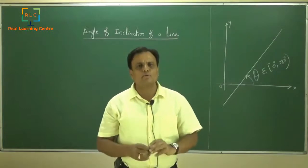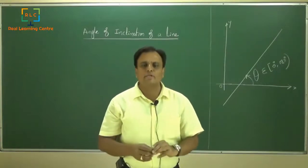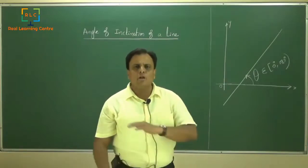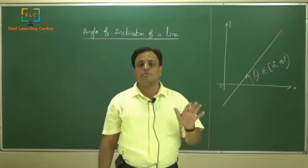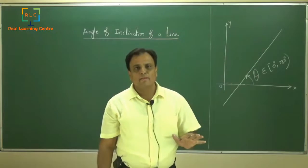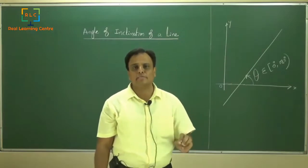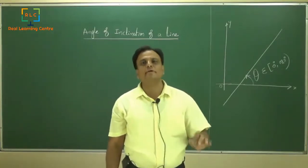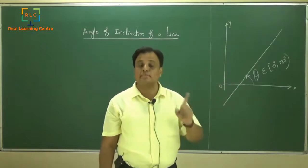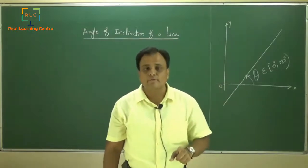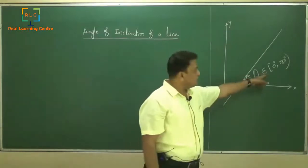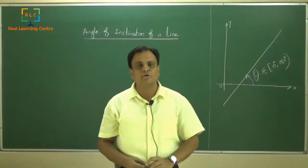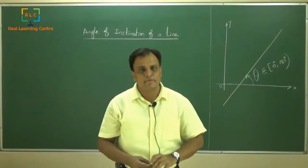One thing to understand properly: the inclination of the line always lies in the interval 0 to 180 degrees. For all horizontal lines, the angle of inclination will always be 0 degrees. The angle of inclination is the angle of the line with the positive x-axis, measured in the positive direction, lying in the interval 0 to 180 degrees — where 0 is included and 180 is not included.